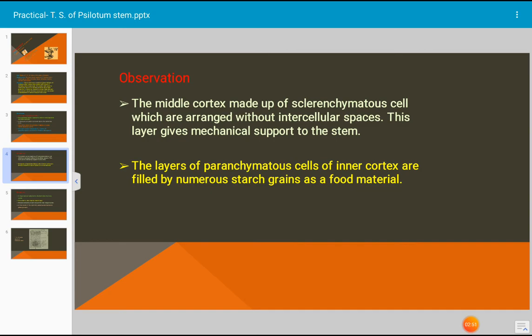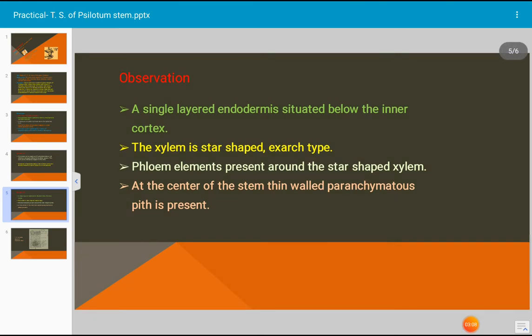This layer gives mechanical support to the stem. The layers of parenchymatous cells of inner cortex are filled by numerous starch grains as a food material. A single layered endodermis is situated below the cortex.